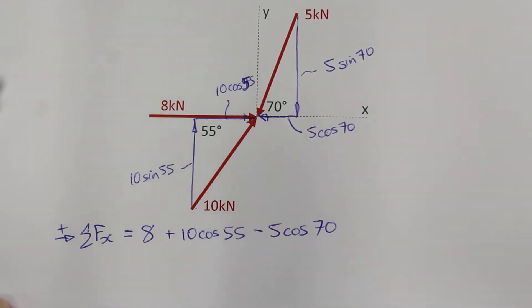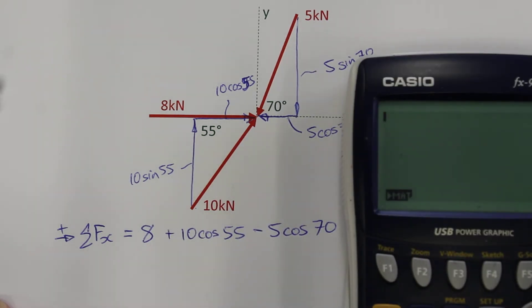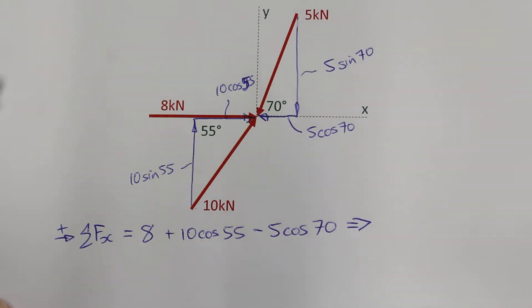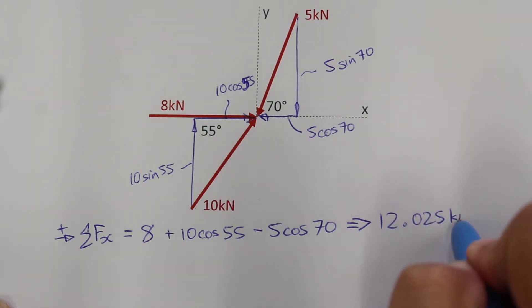And 5 cos 70. We can add these forces together. So 8 plus 10 cos 55 minus 5 cos 70, I get 12.025. The units being kN.